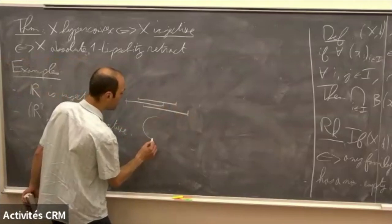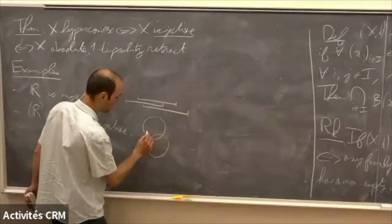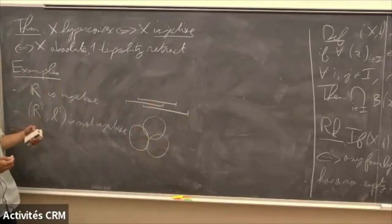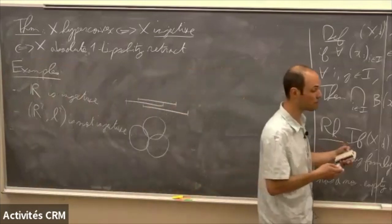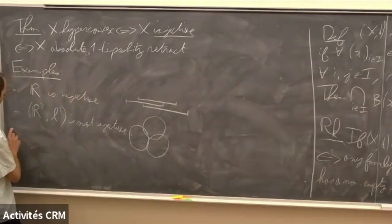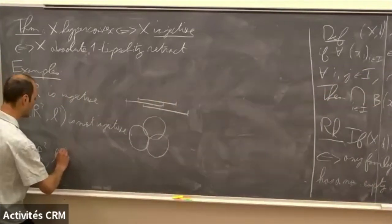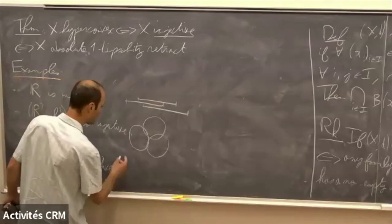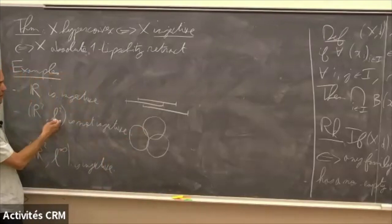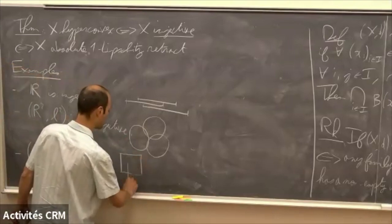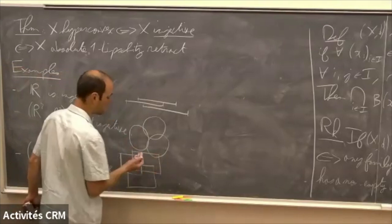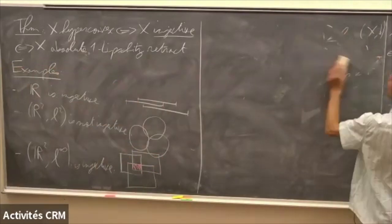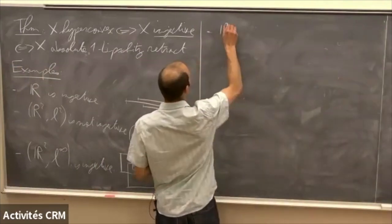R² with the L2 metric is not injective because you can draw three pairwise intersecting balls that do not globally intersect. In a nuclear space they do not globally intersect. But if you take R² with the L∞ norm it is injective. The difference between L2 and L∞ is that you pass from disks to squares, and for squares this intersection property is more convincing.